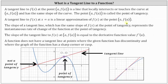What is a tangent line to a function? A tangent line to the function f of x at the point a comma f of a is a line that locally intersects or touches the curve at the point a comma f of a and has the same slope of the curve. The point a comma f of a is called the point of tangency.